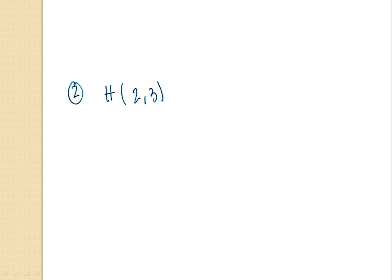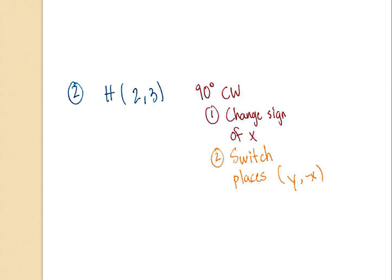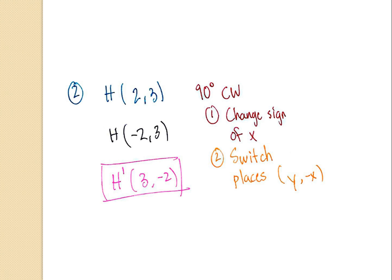If you've unpaused the video, that means everyone has written down the notes for number one. Let's go on to number two. Number two asks us about H prime, which is H in the original graph at the top of the page. The original point H is positive two comma positive three. The question asks us to rotate it 90 degrees clockwise. To do that, I change the sign of X from positive to negative, and then I switch the places of X and Y. If someone has their hand raised, call on them — if they have three comma negative two, they are correct. Go ahead and pause the video and make sure everyone has this written down.